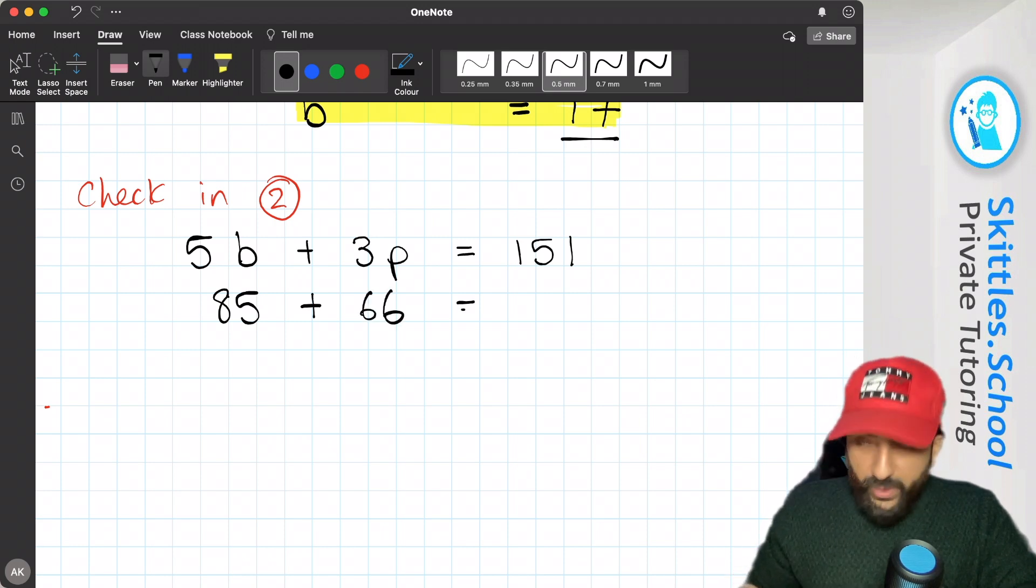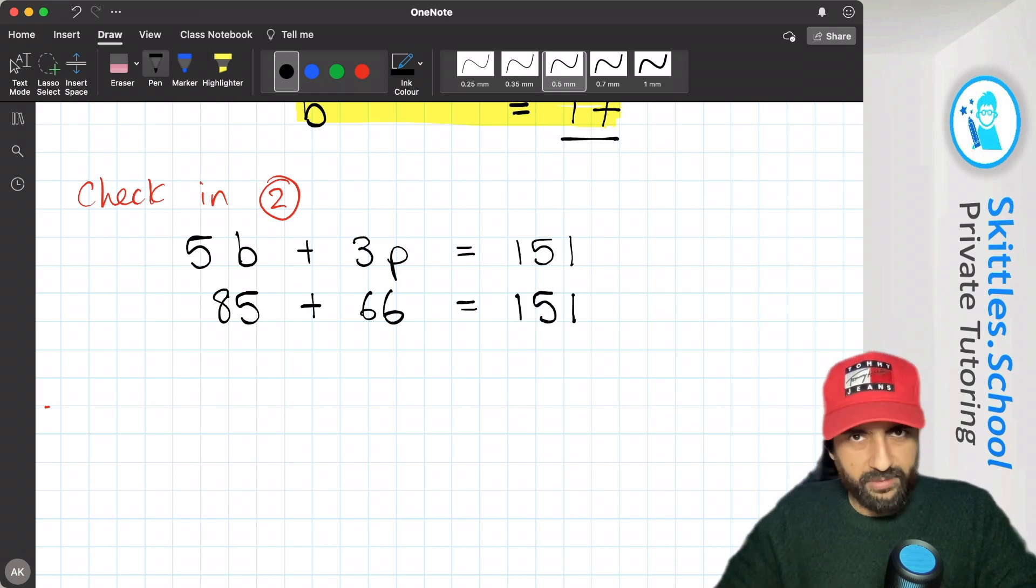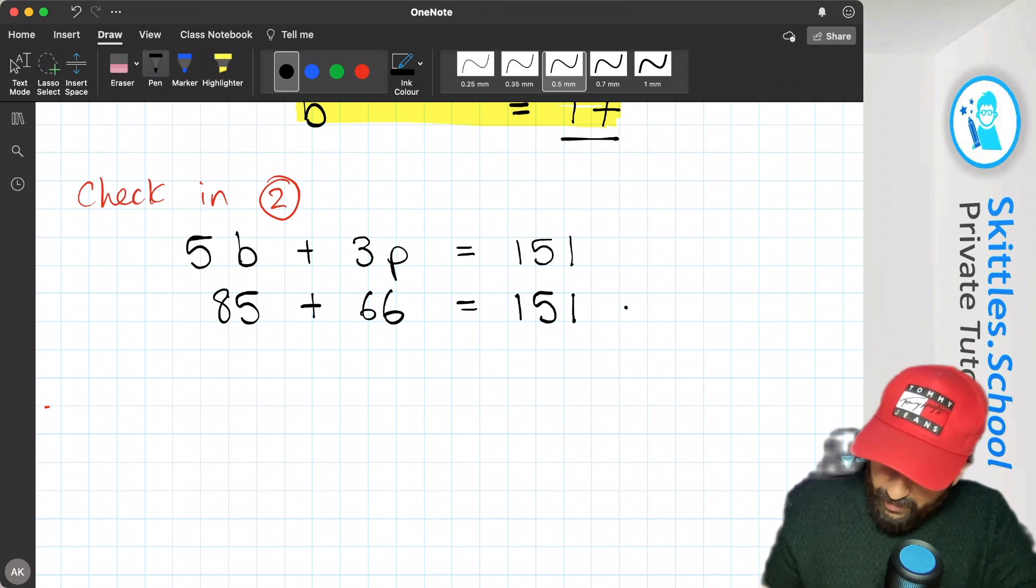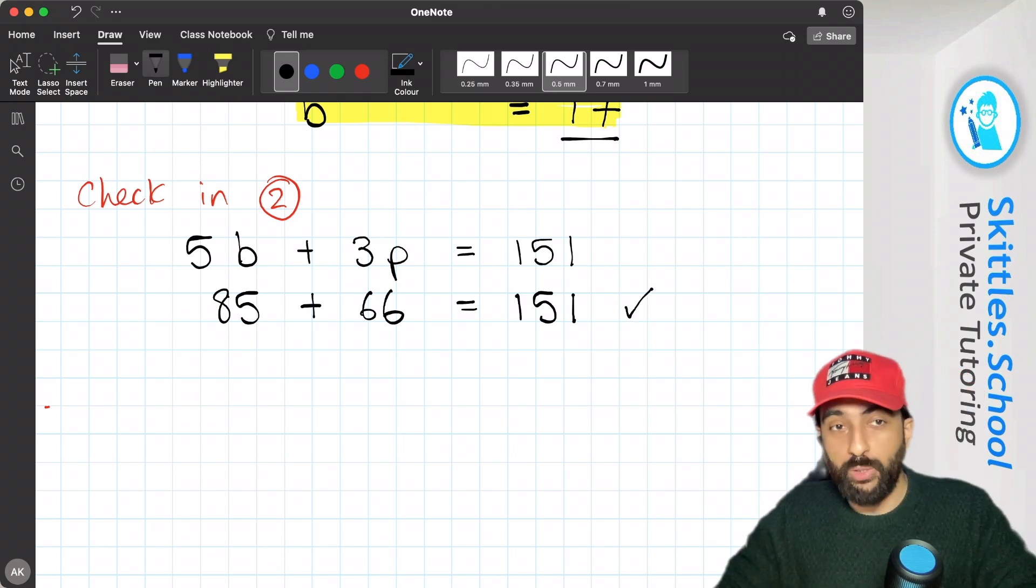And if we add those up, they should equal 151. And I think they do. So we can assume that our value for bananas and our value for pears are correct.